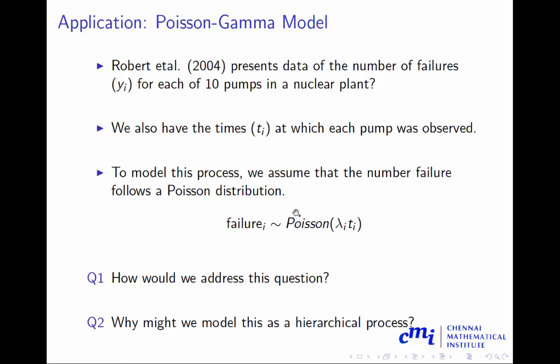The model we are saying is y_i, the failure i, follows Poisson(lambda_i * t_i). If each failure of each pump follows a Poisson distribution with a certain parameter, if you take lambda_i, that itself gives you a separate parameter for the particular pump. However, if you want this lambda to be modeled separately, for each of the 10 pumps each will have its own parameter, then the question is how do we address this question? We are studying Bayesian hierarchical models, so we will use Bayesian hierarchical models. But the question is, why might this Bayesian hierarchical model be suitable?